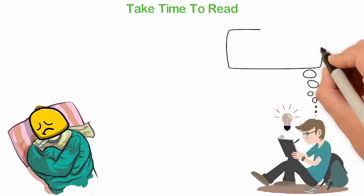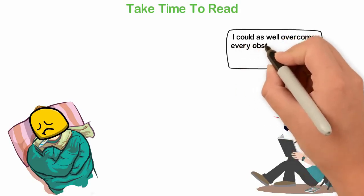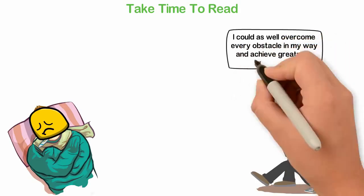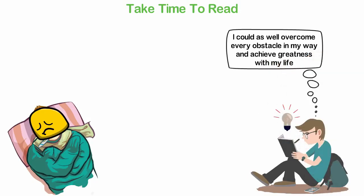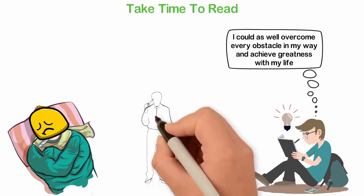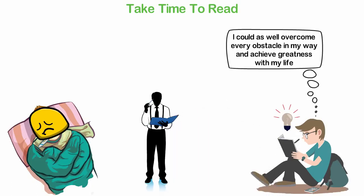When I started reading books, I started reading the stories of ordinary people who achieved extraordinary things. These stories encouraged me and gave me hope that I could overcome every obstacle in my way and achieve greatness with my life. If you know that some people had the same disadvantages you think you have yet went on to achieve greatness, you suddenly start to believe in yourself. When you start to believe in yourself, you start to think big, and when you increase the size of your dreams, you automatically increase what is possible with your life.